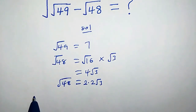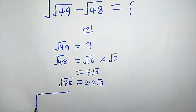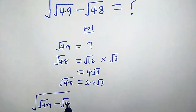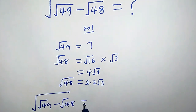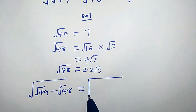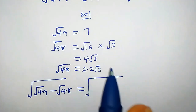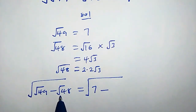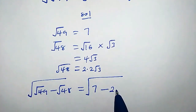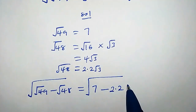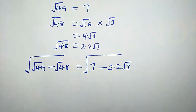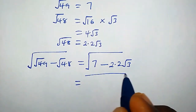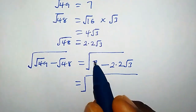Back to our question: we have square root of (square root of 49 minus square root of 48), which equals square root of (7 minus square root of 48). Now square root of 48 is 2 times 2 times square root of 3, so let's proceed further.